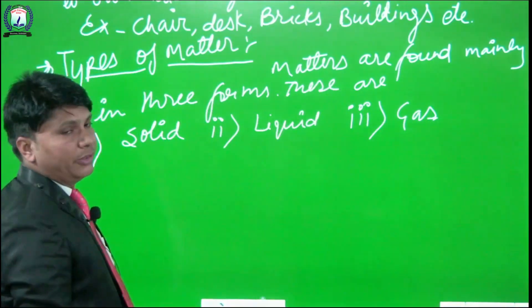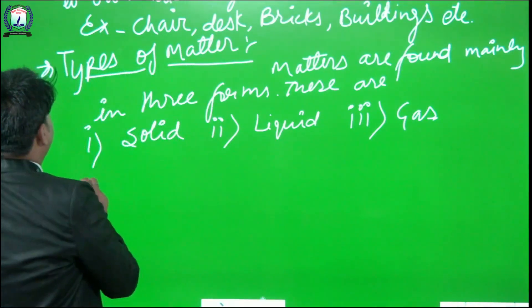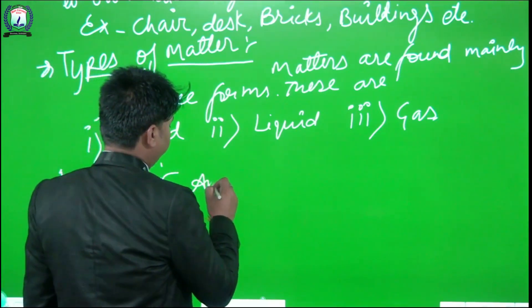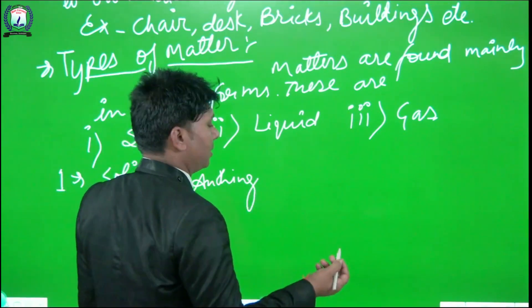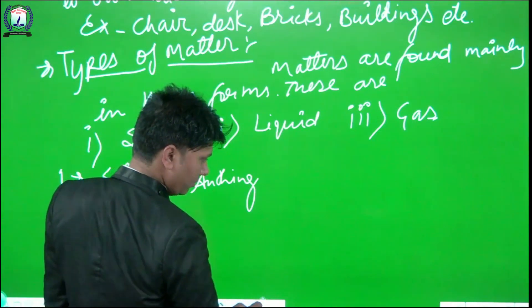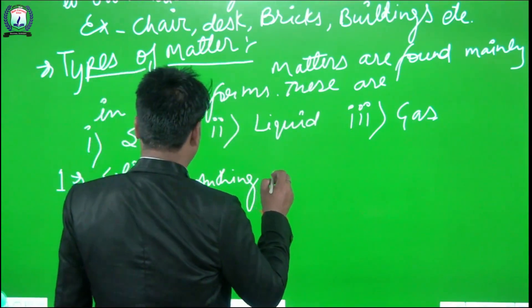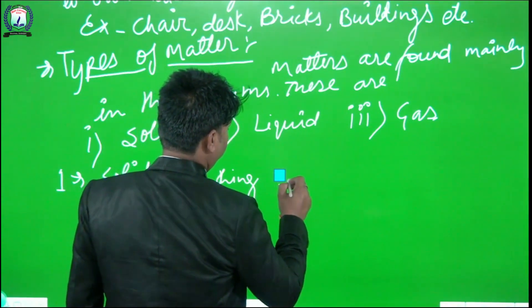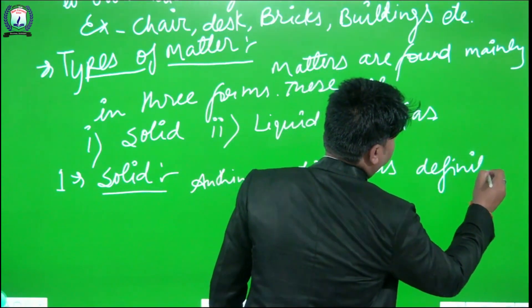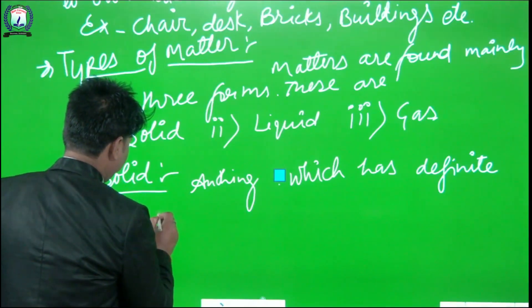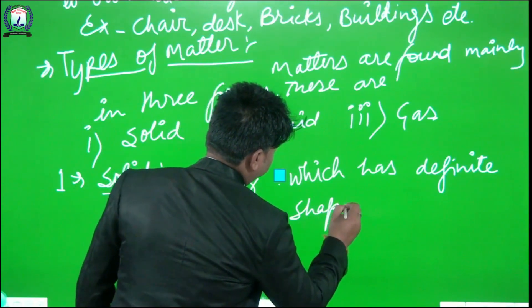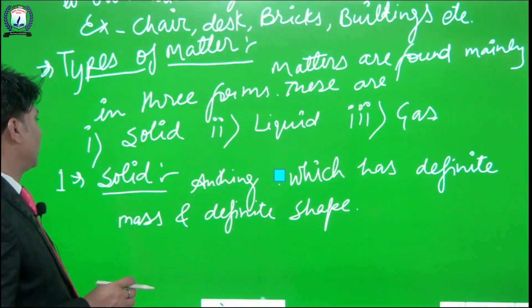Now, if we want to discuss solids, the definition of solid is: any substance which has a defined mass and a definite shape is called solid.